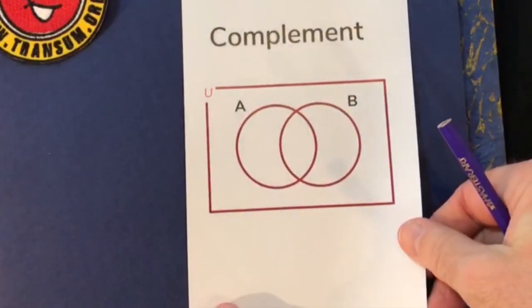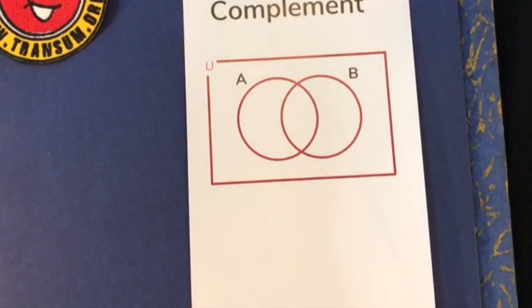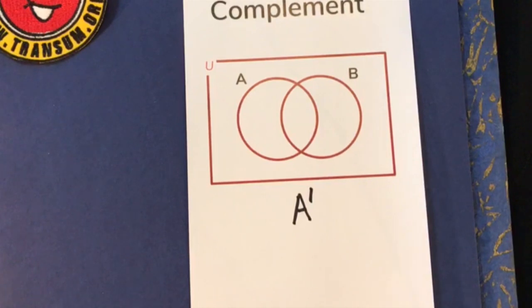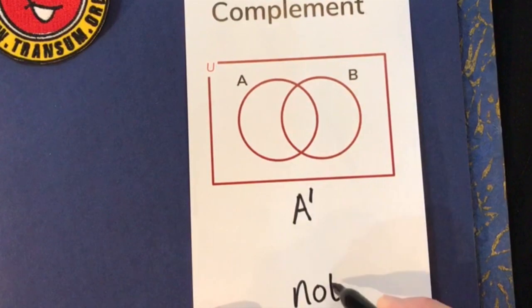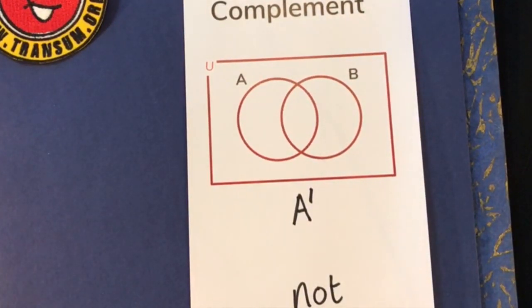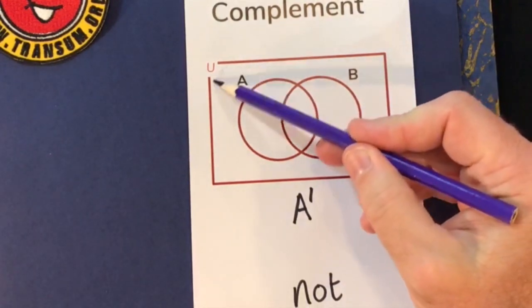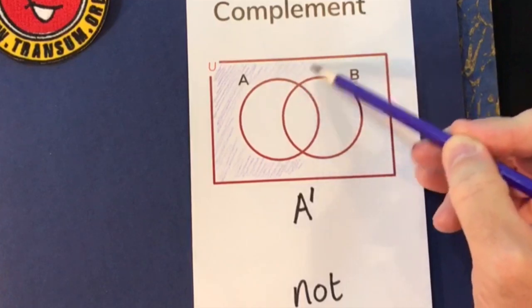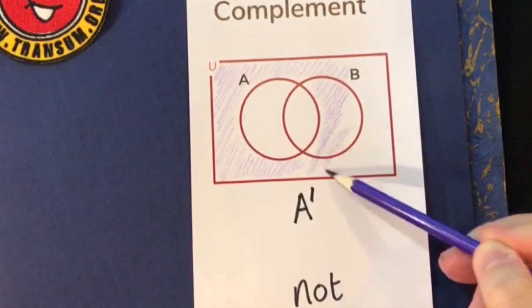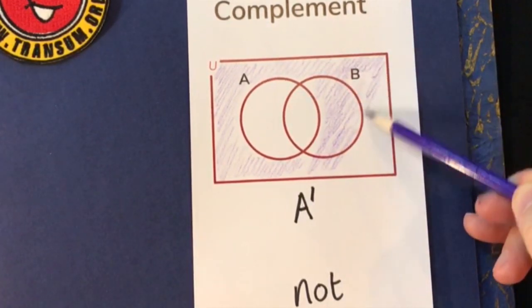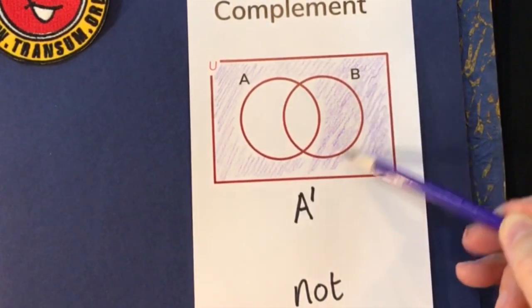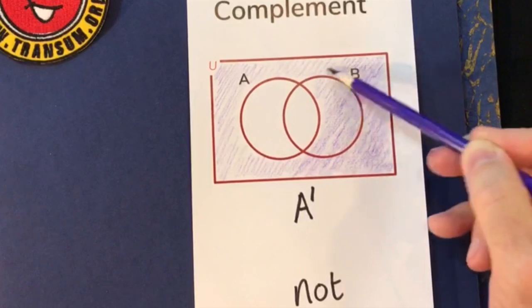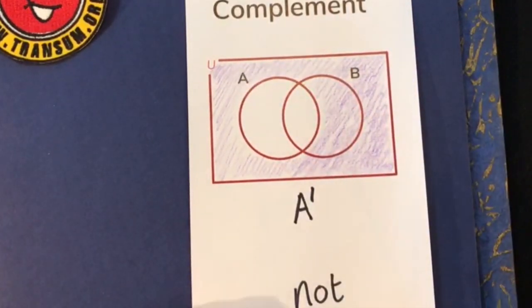The next word is complement, and this means everything that is not in set A. So everything over here that's not in set A — it's in the universal set but not in set A. Even the part that's in B but not in A needs to be coloured in. So you colour in everything that is not in A.